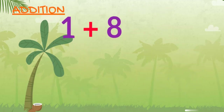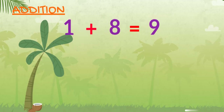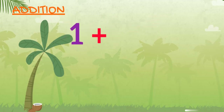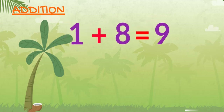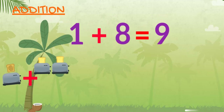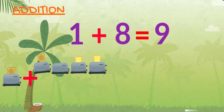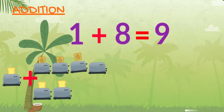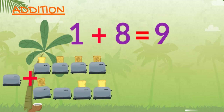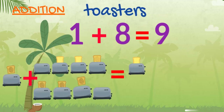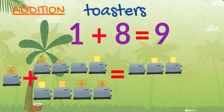1 plus 8 equals 9. 1 toaster plus 8 toasters equals 9 toasters.